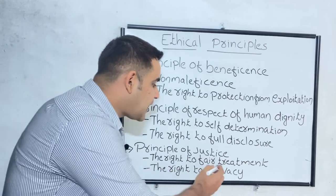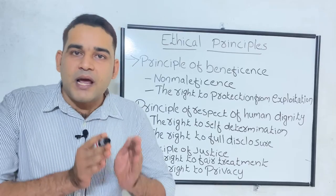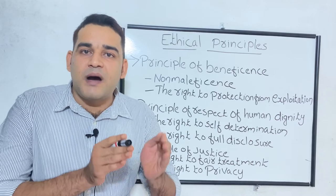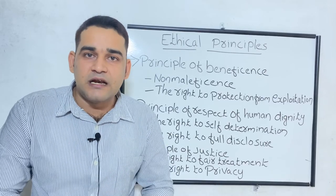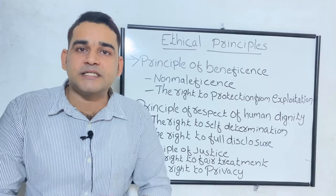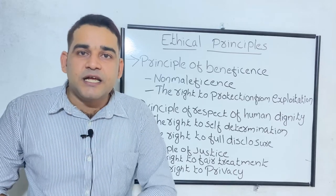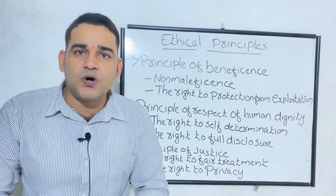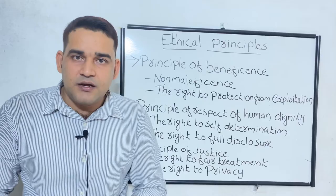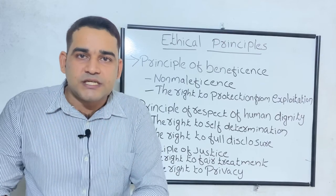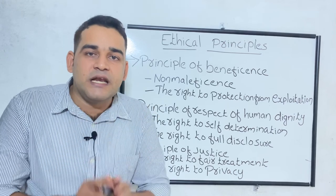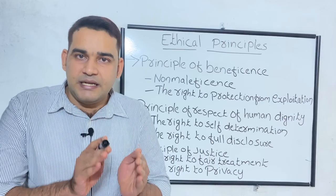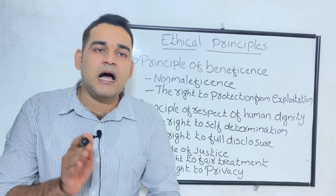The next one is the right to privacy. Privacy should be given to the participants — the information provided by the participant should be confidential and secret, including their personal data. You should use the information only for your research and not share it without the knowledge of the participants. Privacy and confidentiality should be maintained. That is the last thing coming under the principle of justice.